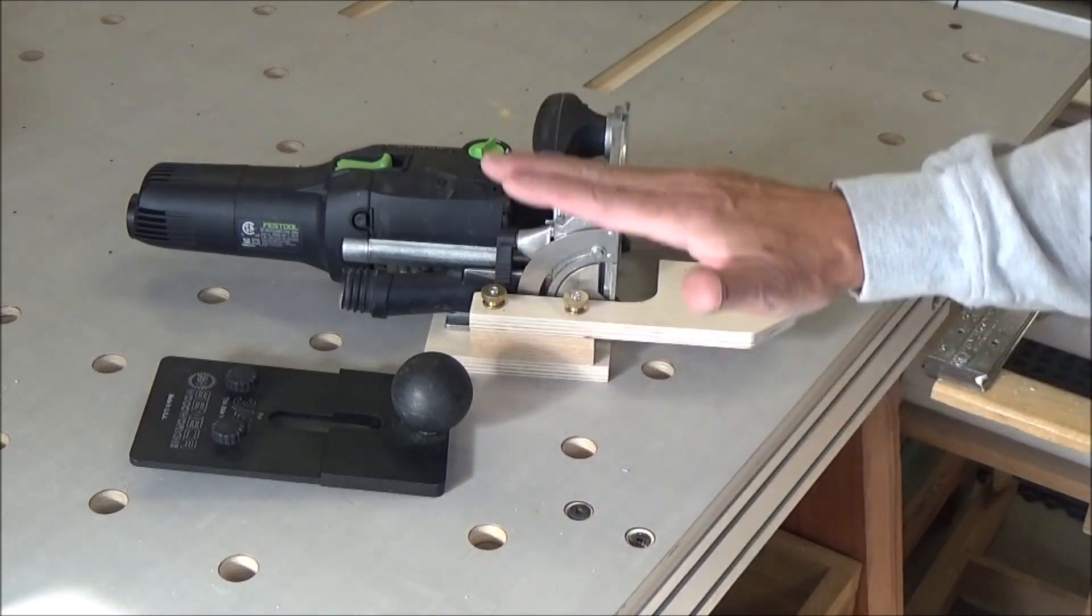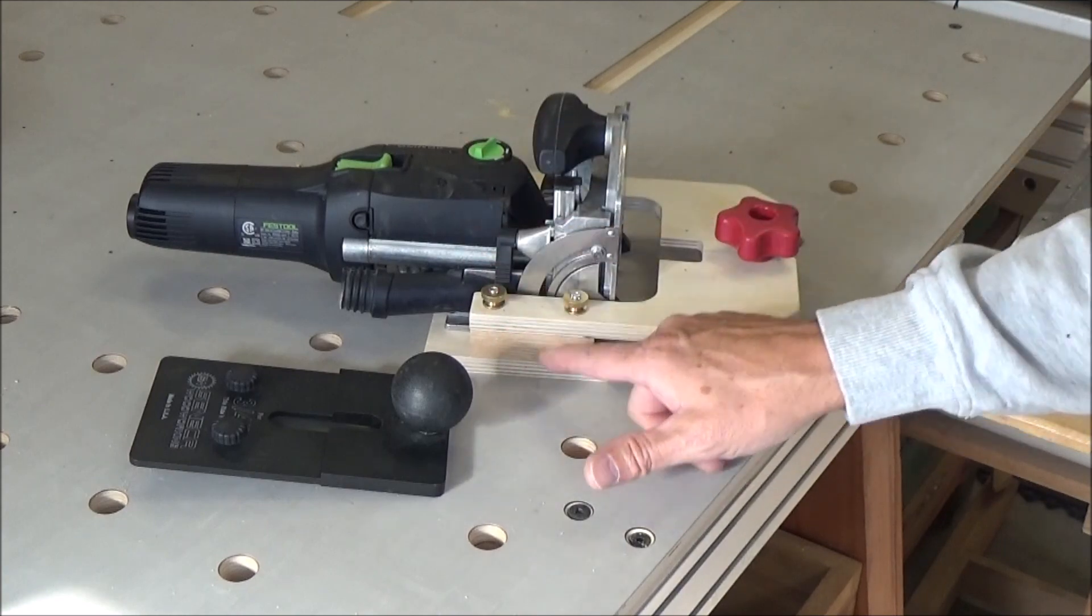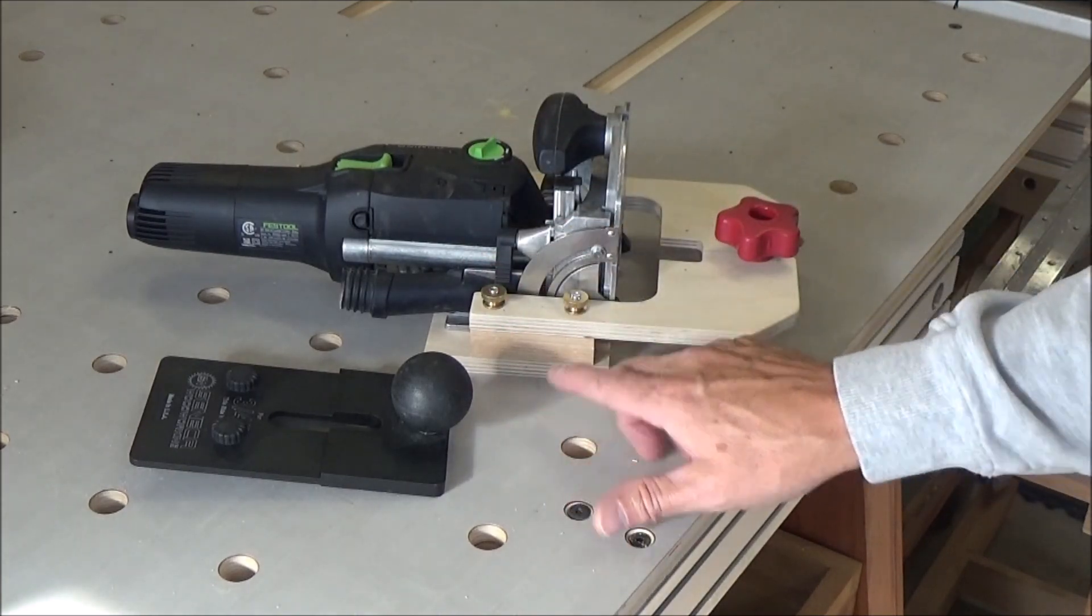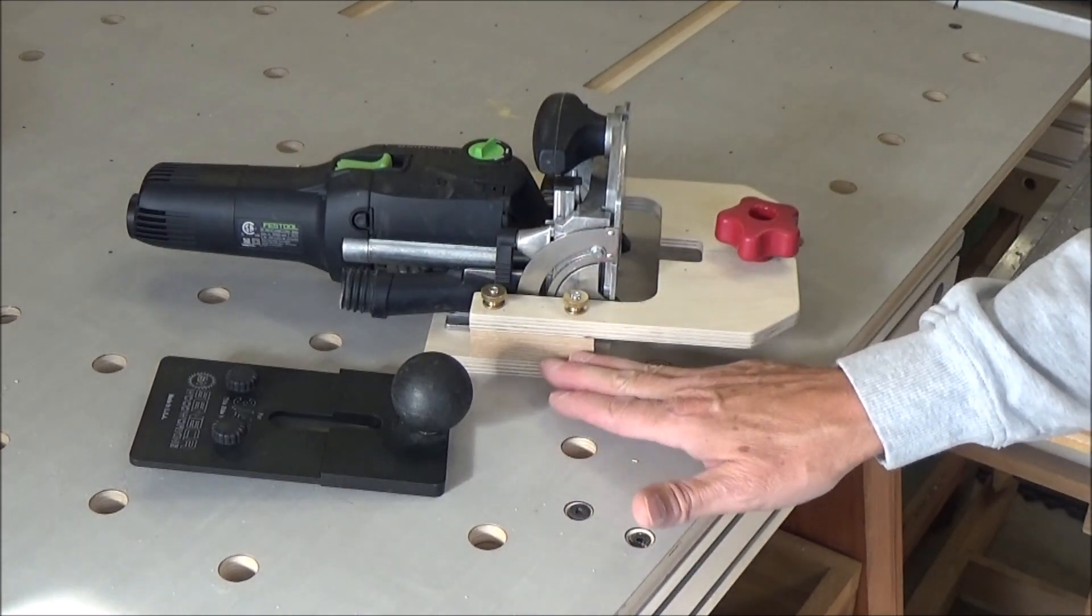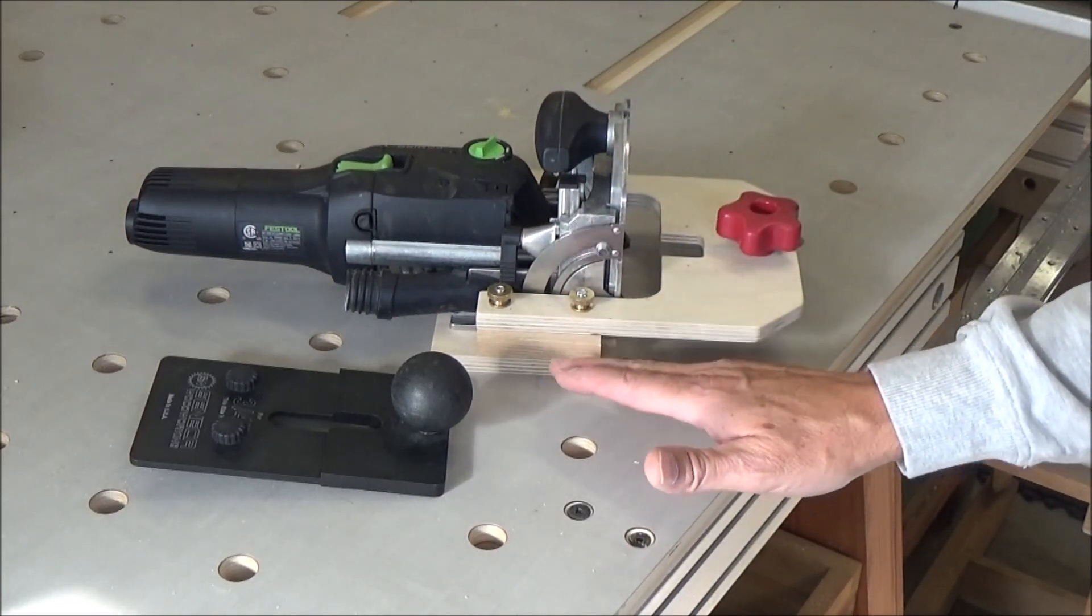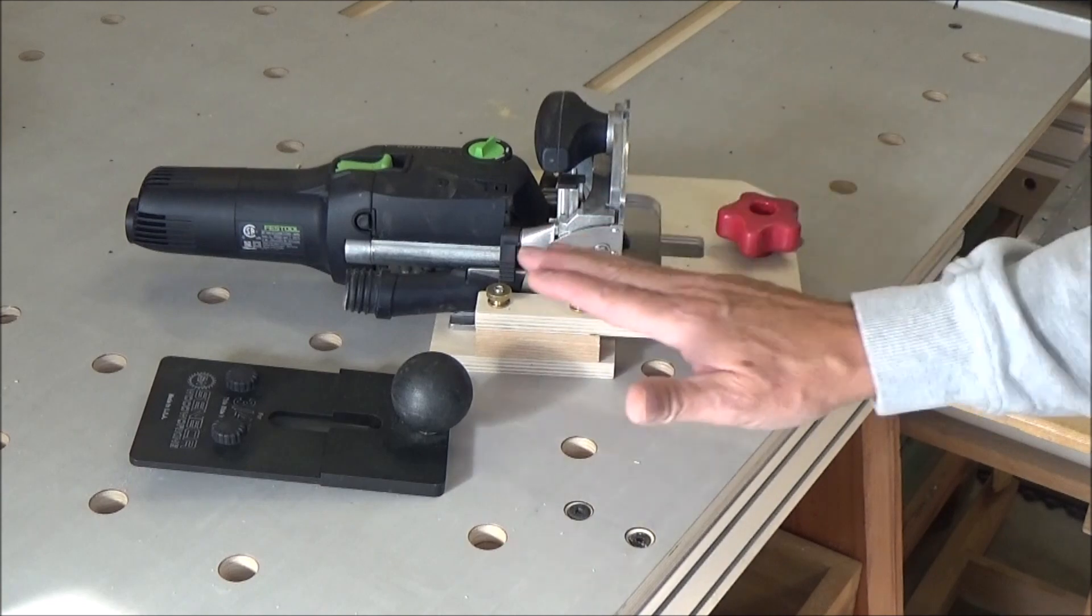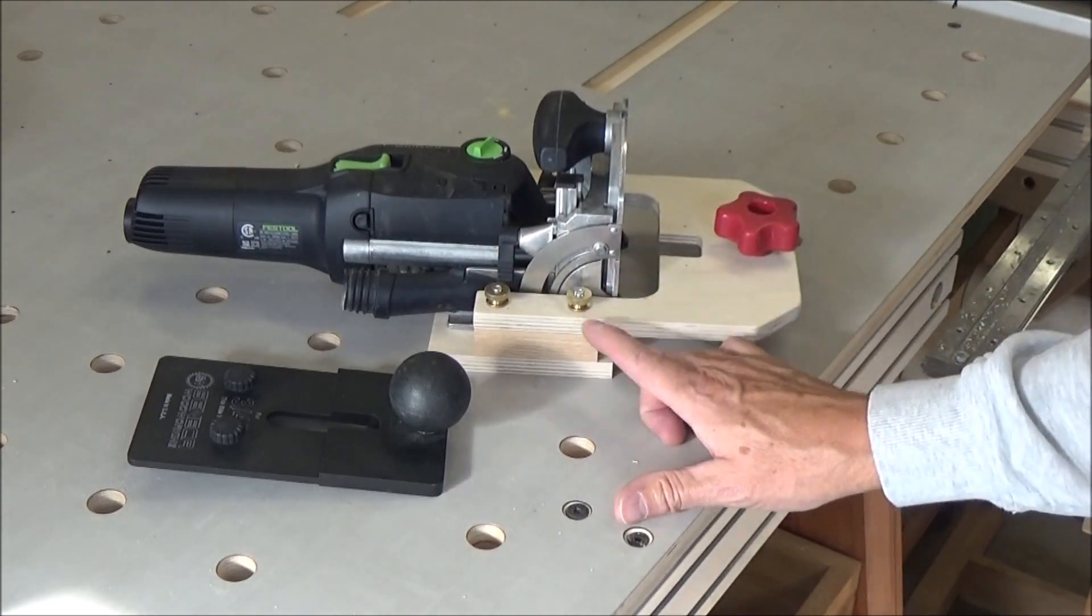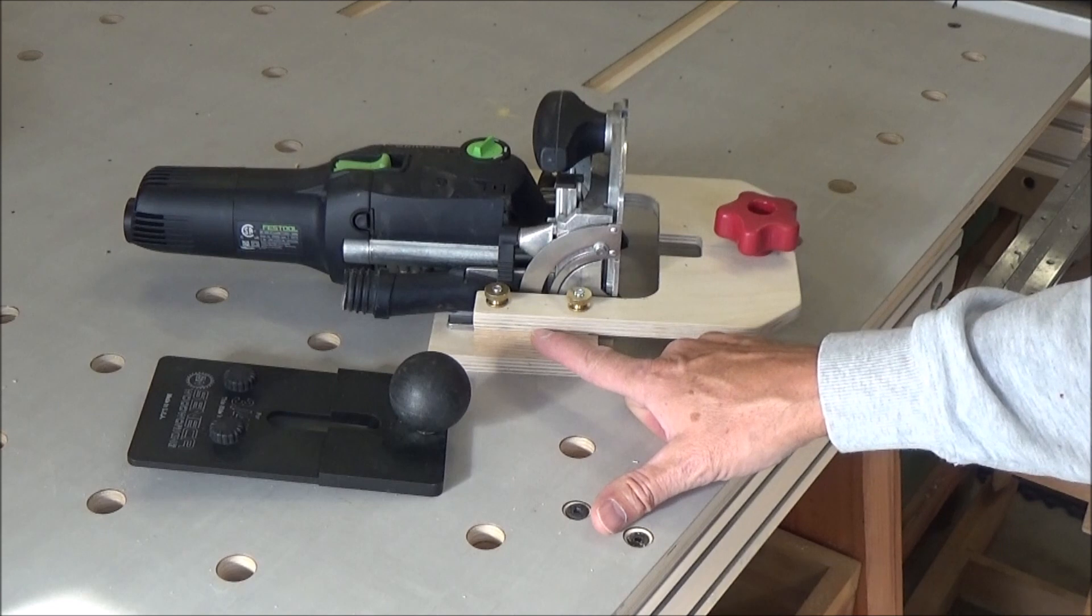To jack this thing up and down. Granted, if you want to go thinner, you're going to have to take this block out. But 95% of the work I do is with three-quarter inch material, so I like the way it's set up right now. It's almost dead center on three-quarter.